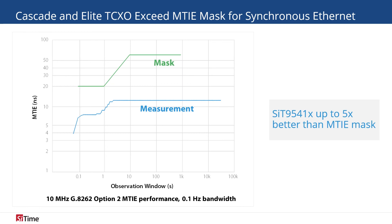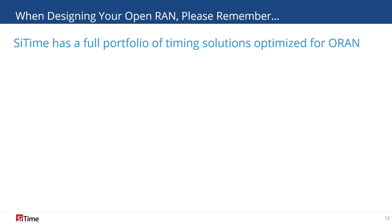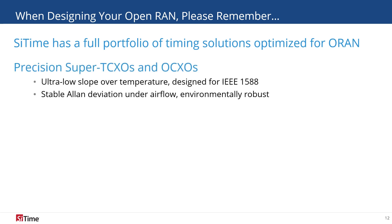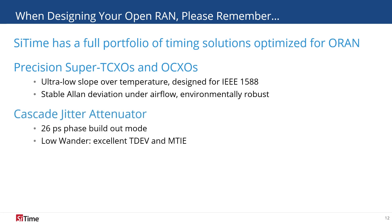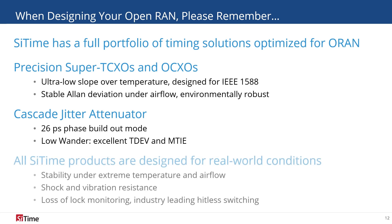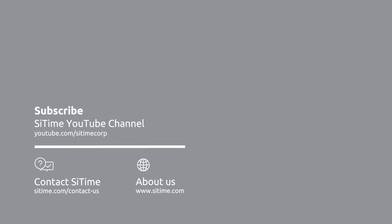Between the Elite Super TC-XO and the Cascade Network Synchronizer, Sightime has a full timing portfolio of performance solutions for synchronous Ethernet. When designing your open RAN system, remember Sightime's full portfolio of timing solutions for open radio access networks. Our precision TC-XOs and OC-XOs offer best-in-class stability for synchronization and excellent Allan deviation under airflow. Sightime's jitter attenuator synchronizes with a 1588 reference clock from the FPGA in the front-haul switch and distributes low wander clock signals throughout the system. All of Sightime's products are designed for the harshest environments and are the most reliable oscillators on the market. Please subscribe to our YouTube page and learn more at www.sightime.com.